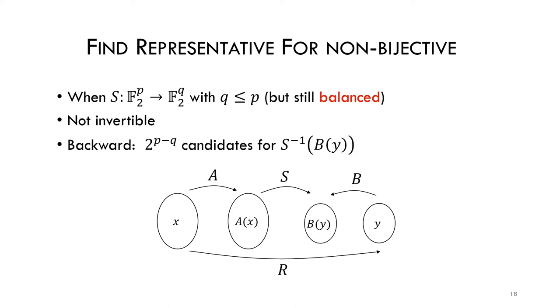If S is not invertible, then in each backward sweep there are 2 to the p minus q possible values for the inverse of S, if S is balanced.